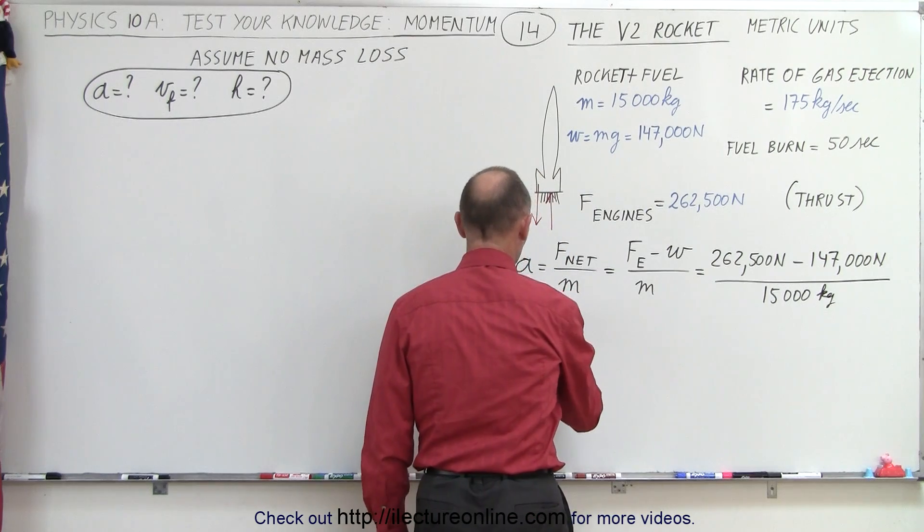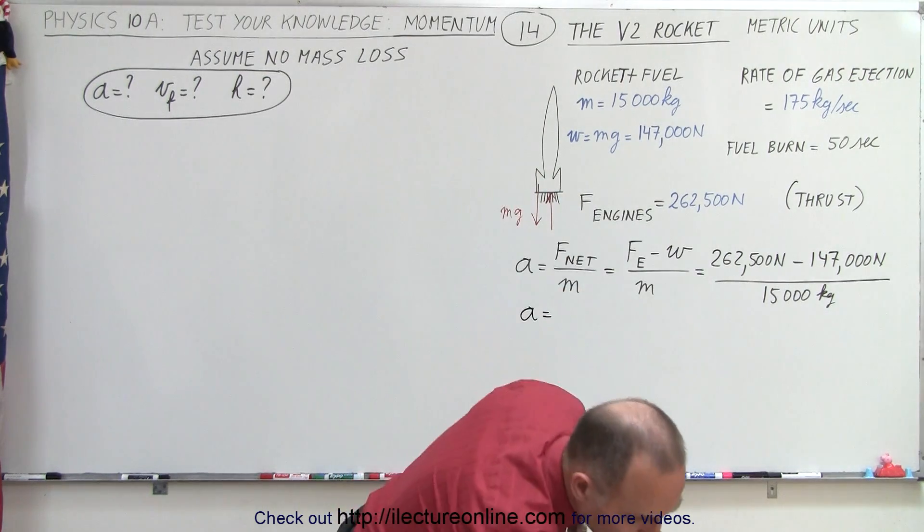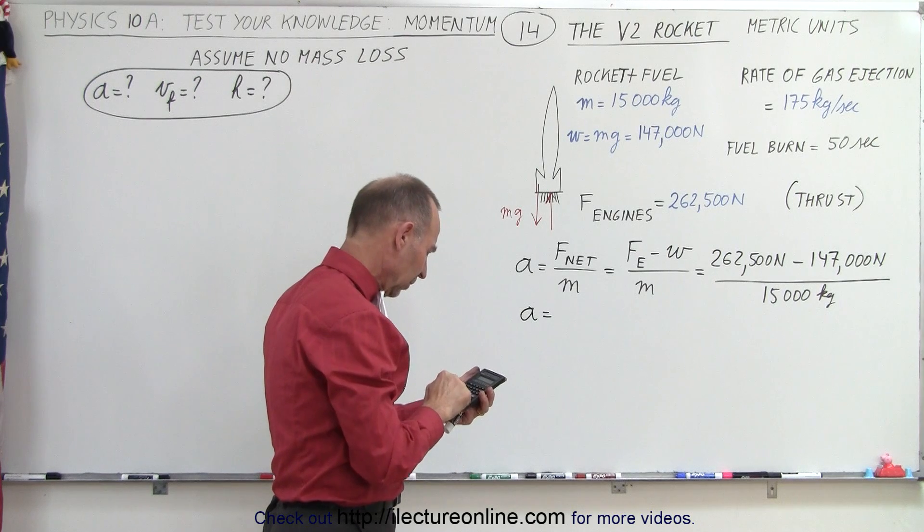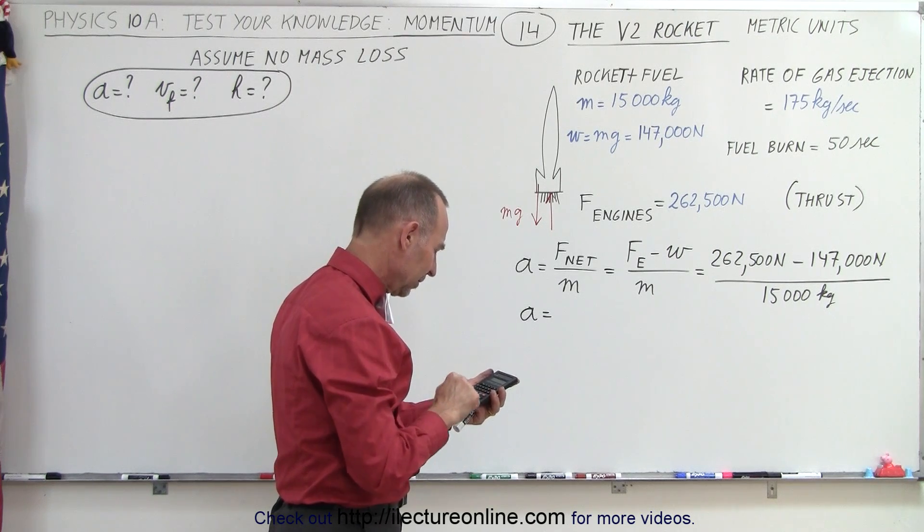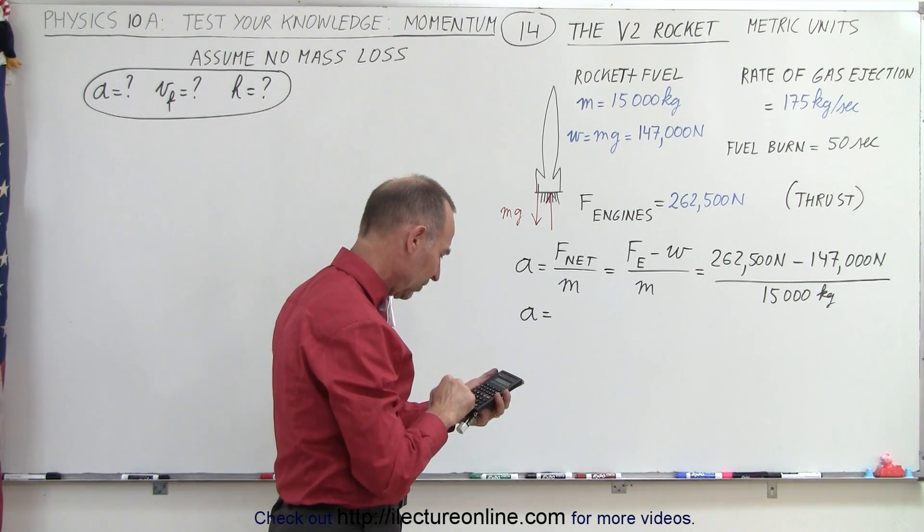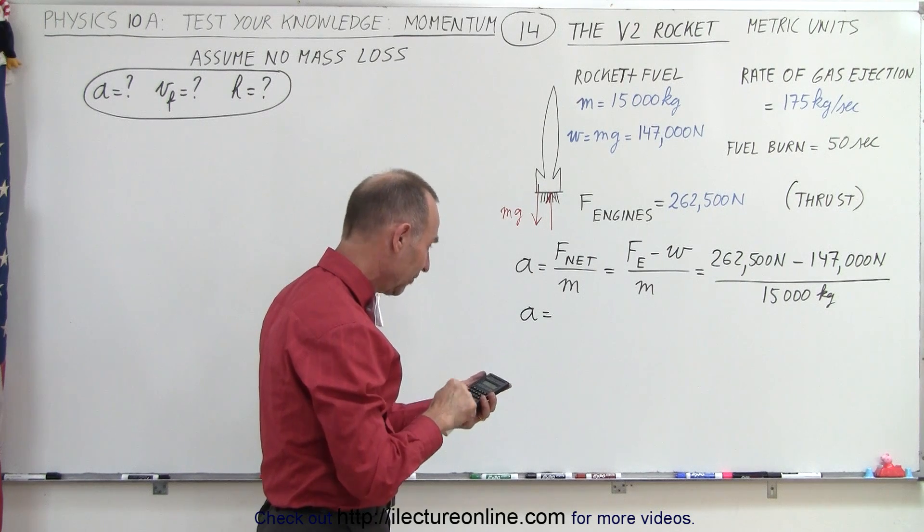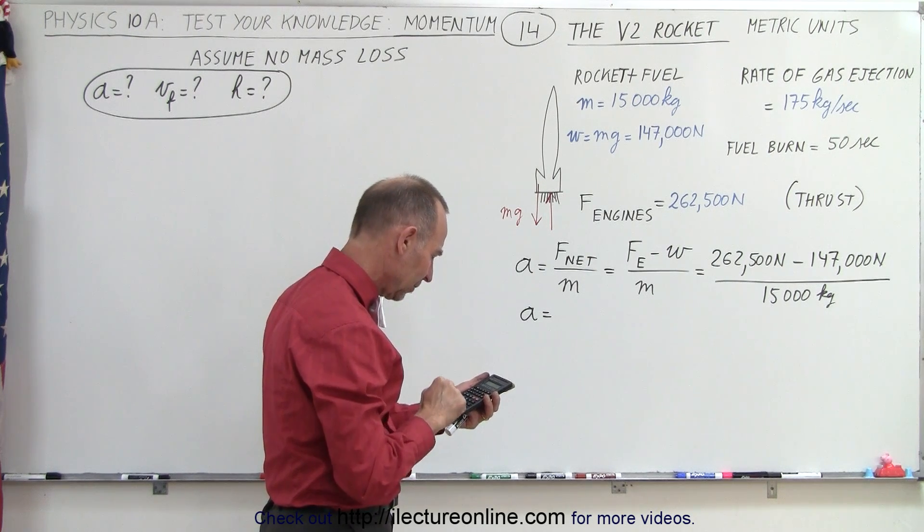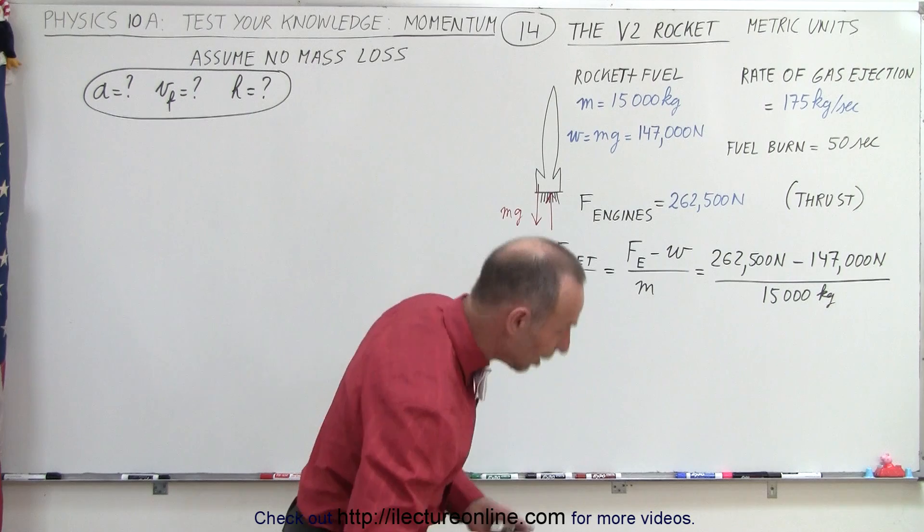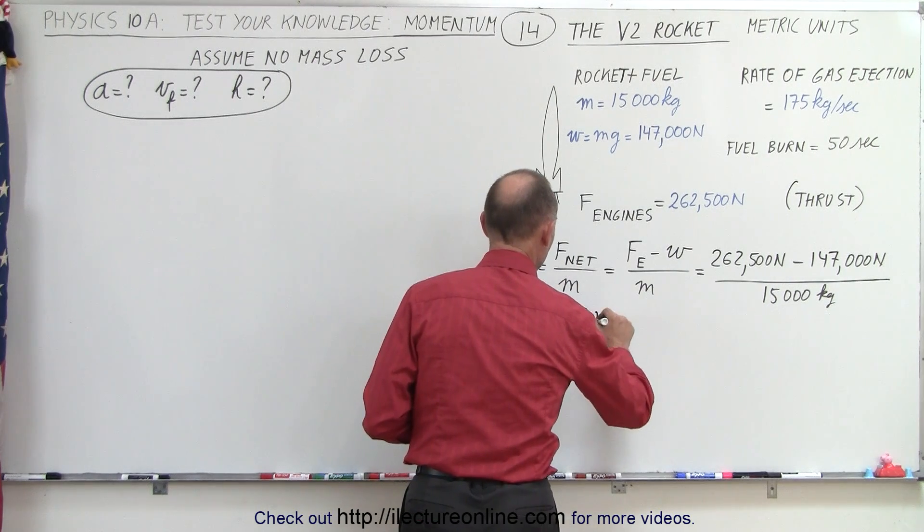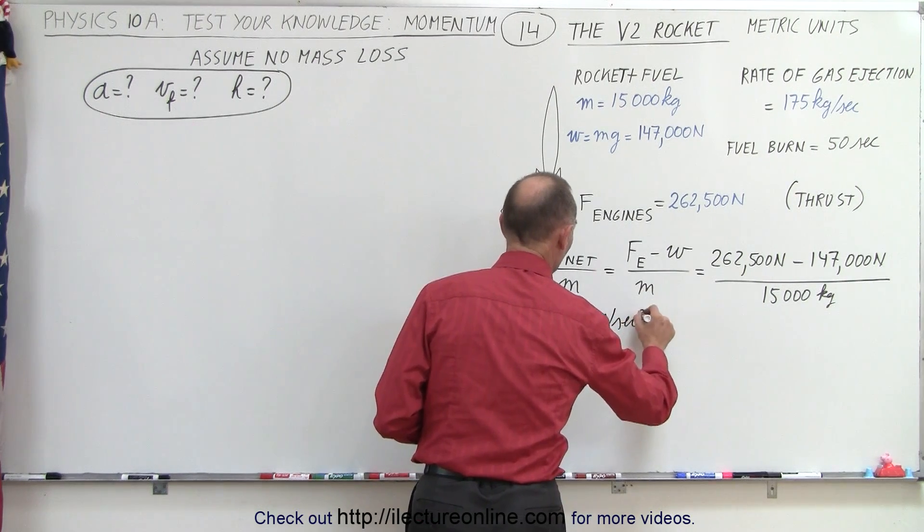So that gives us an acceleration equal to 262,500 minus 147,000, and divide that by 15,000 equals an acceleration of 7.7 meters per second squared.